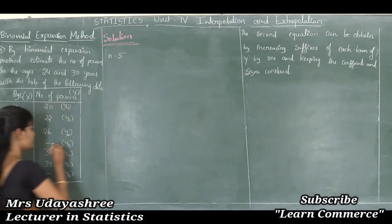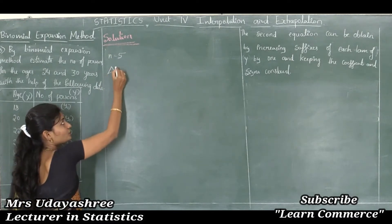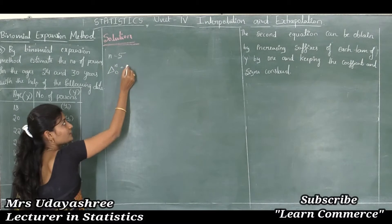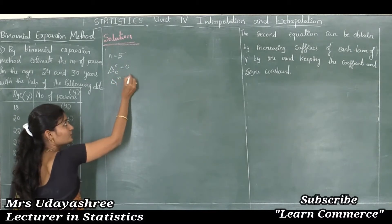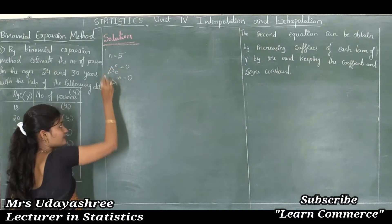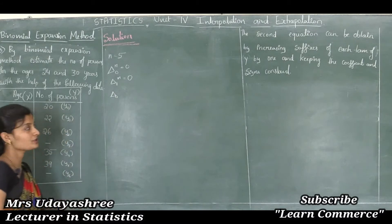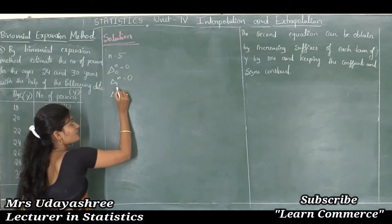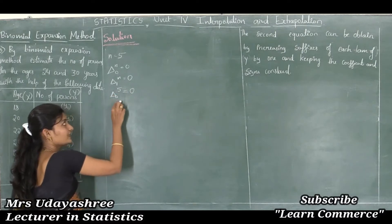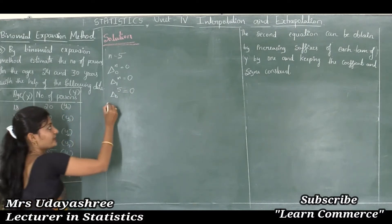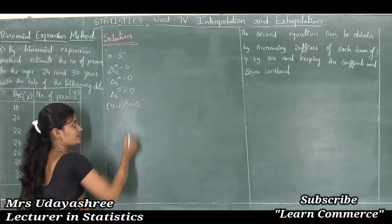Since there are two missing values, we write delta naught to the power n = 0, and delta 1 to the power n = 0. First I will use delta naught to the power n. Here n is 5, so delta naught to the power 5 = 0, which we can write as (y - 1)^5 = 0.